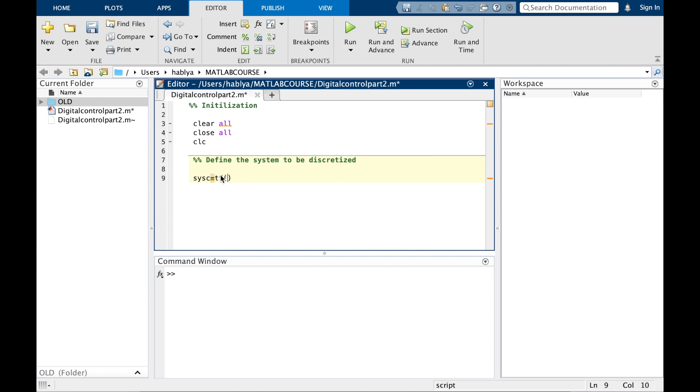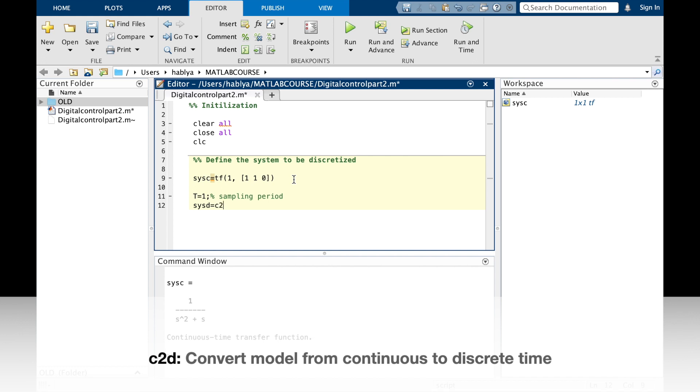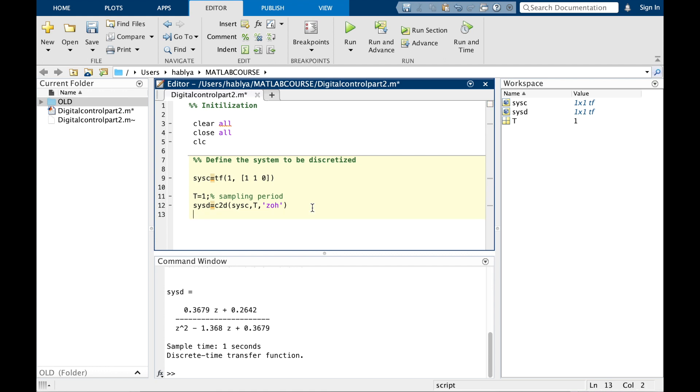We will define the continuous system using tf. As you see here, I will put the sampling period T equal 1, and then I will use c2d which converts the model from continuous time to discrete time, and I will use the method zero-order hold (ZOH).